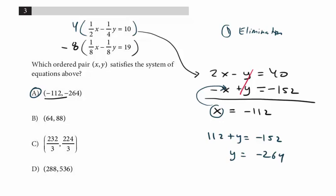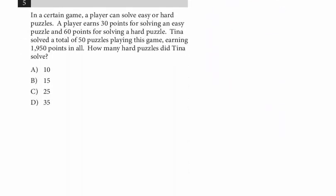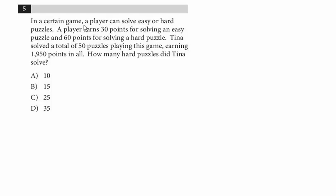Now we're going to do one last question in this video. Contrast the next question with the one we just did. In a certain game, a player can solve easy or hard puzzles. A player earns 30 points for solving an easy puzzle and 60 points for solving a hard puzzle. Tina solved a total of 50 puzzles playing this game, earning 1,950 points in all. How many hard puzzles did Tina solve? This is another system of equations.